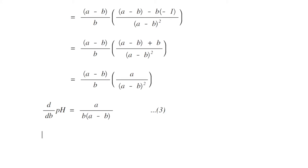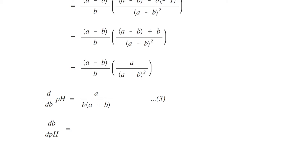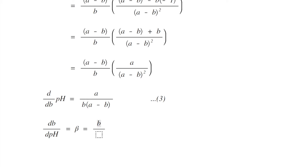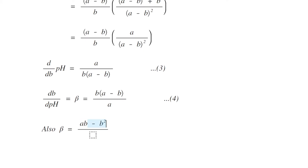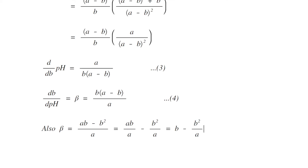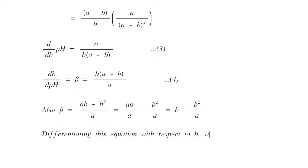Since d(pH)/db is the reciprocal of beta, taking the reciprocal gives: db/d(pH) equals beta equals b(a minus b) divided by a. This is equation number four. Expanding the bracket: beta equals (ab minus b²) divided by a, which equals b minus b²/a.